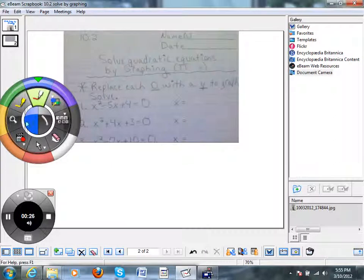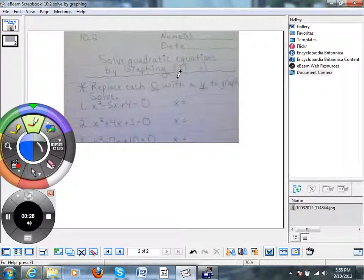But now I want to show you how we can actually solve these quadratic equations by graphing. So what I'm looking at is trying to show you the back side of that sheet we were working on on Friday. So instead of just graphing, we're actually going to solve a quadratic equation. This first one says x squared minus 5x plus 4 equals 0.